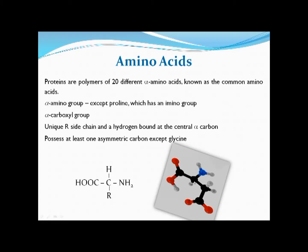Looking at the structure clearly: this is the alpha carbon with four different groups — a hydrogen, an amino group, a carboxylic acid group, and the side chain R. Each of the 20 different amino acids contains a unique R side chain, which is why there are 20 different amino acids.